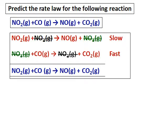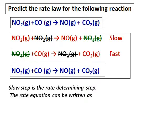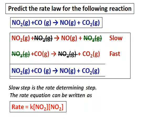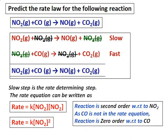To write the rate law, we use the slow step as the rate determining step. The slow step has two molecules of NO₂, so the rate equation is: rate = K[NO₂]². This reaction is second order with respect to NO₂. Carbon monoxide, though a reactant, does not appear in the rate equation, so it is zero order with respect to carbon monoxide.